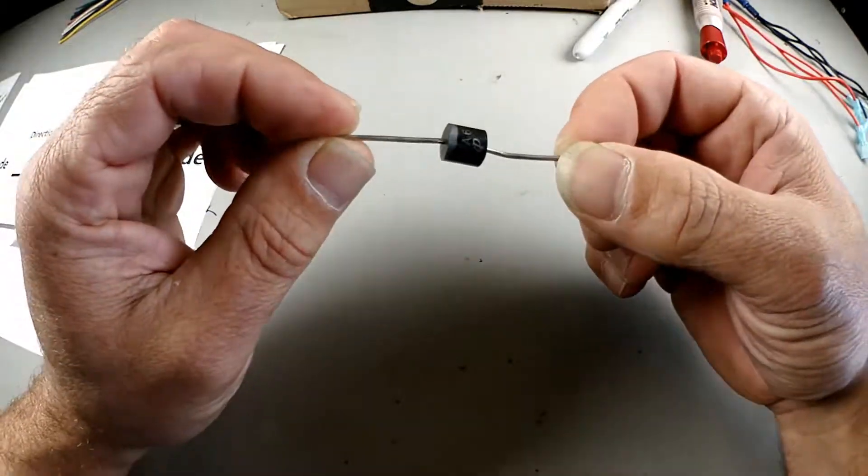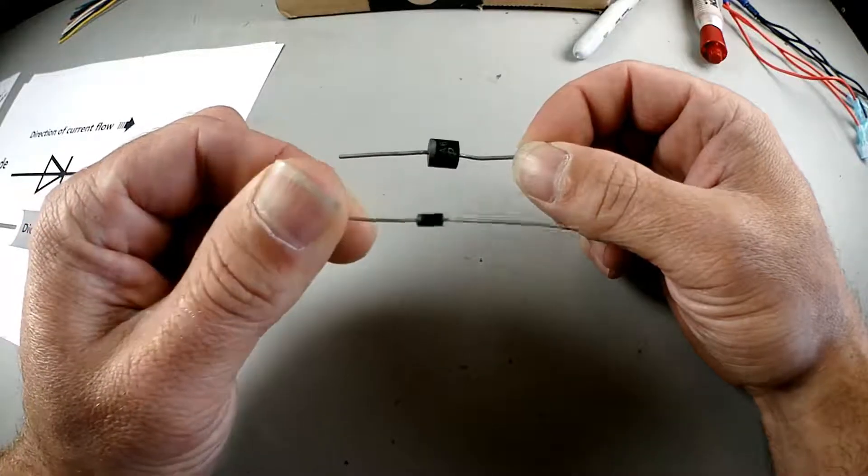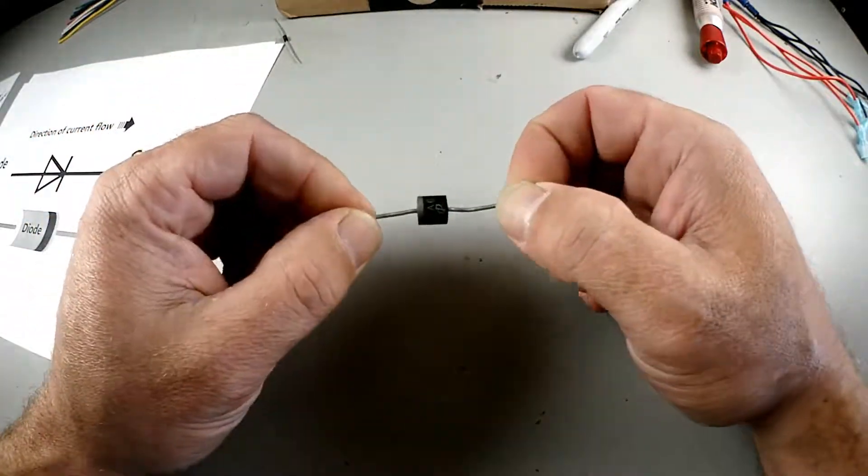So this is a diode. This is actually a 3 amp diode. Normally in most car audio applications we only use this small one which is a 1 amp diode. They also make 6 amp diodes.